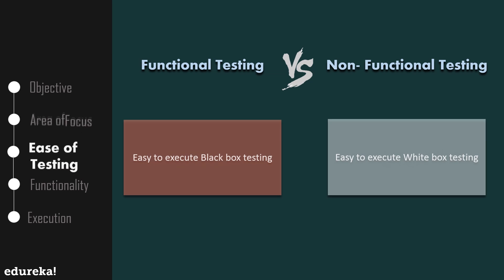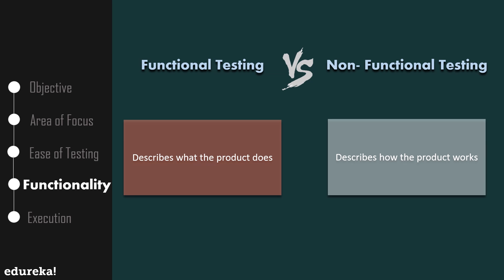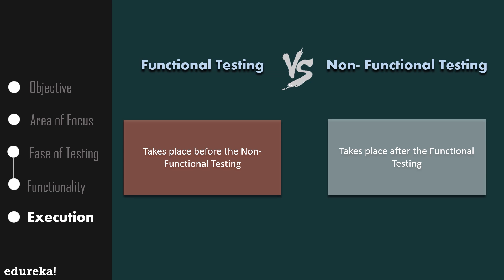The next parameter is ease of testing. Functional testing is mostly used for black box testing, whereas non-functional testing is an easy way to execute white box testing. In case of functionality, functional testing describes what the product does, whereas non-functional testing describes how the product works. For execution, functional testing always takes place before non-functional testing, whereas non-functional testing is performed right after functional testing has been completed.